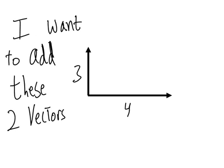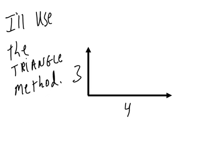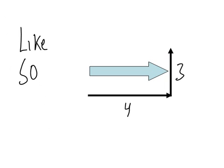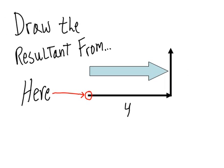I want to add these two vectors. I'll use the triangle method. Move this vector over like so, draw...